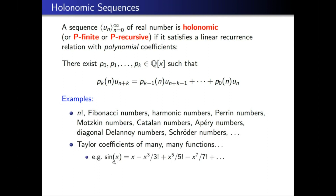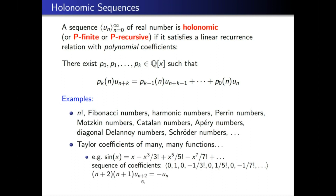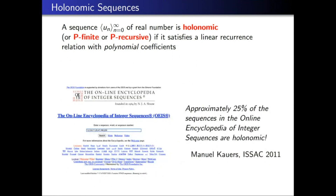For example, the Taylor series of sin(x) has coefficients: the even-order powers have coefficient zero, and the odd-order powers alternate in sign. These coefficients satisfy the holonomic recurrence (n+2)(n+1)·u_{n+2} = −u_n, with initial conditions u_0 = 0 and u_1 = 1.